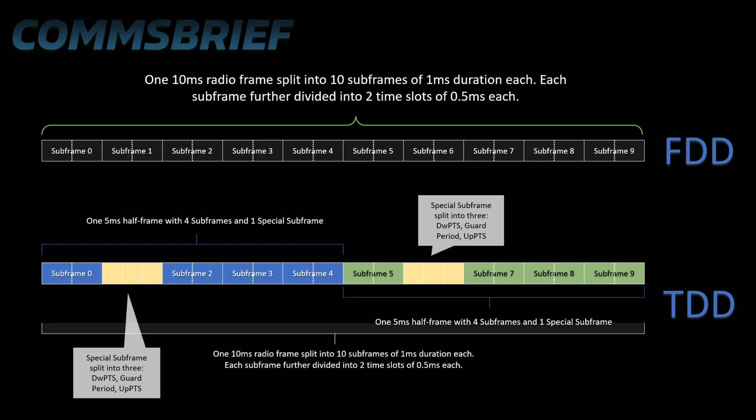Let's now look at the bottom picture. In TDD, each radio frame consists of 2 half frames, and each half frame consists of 5 subframes. Look at the picture now, the picture at the bottom. You will see half of the subframes are in blue color and half in green, so ignore the yellow ones for now.